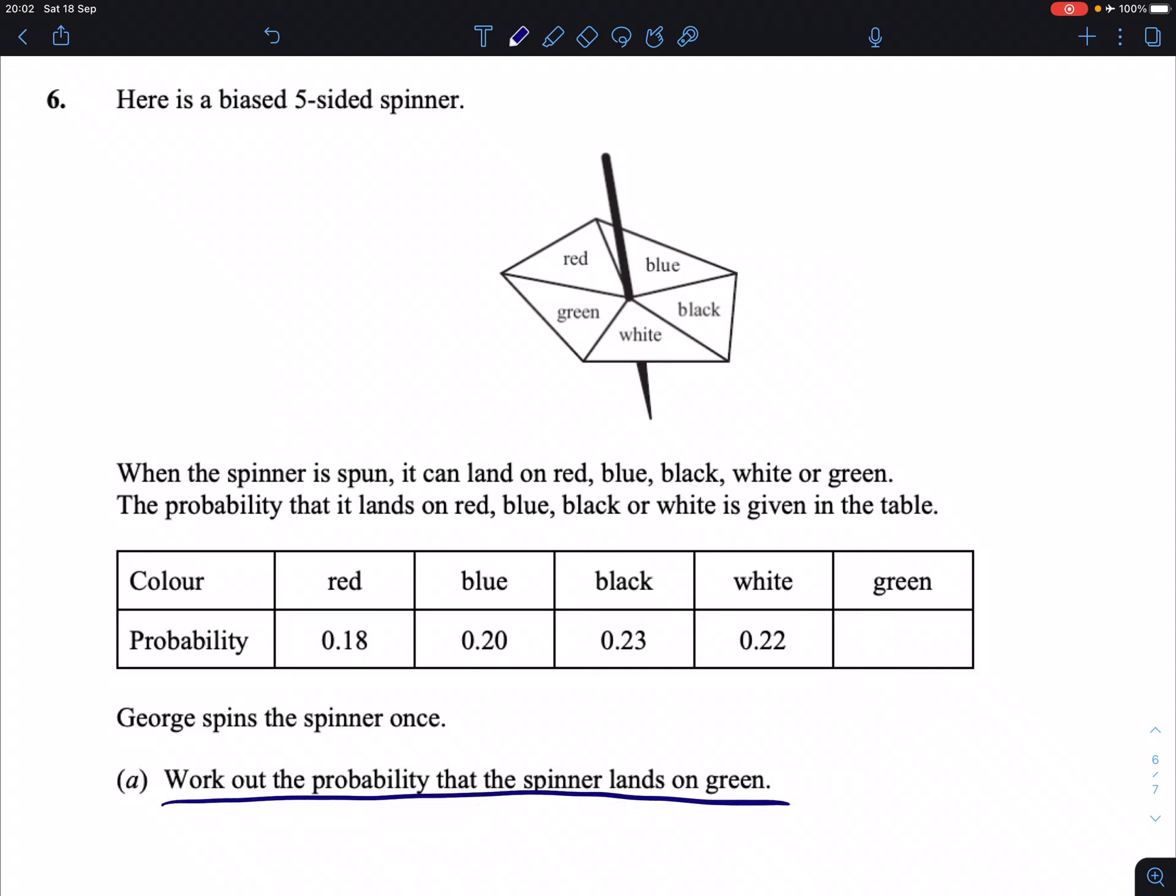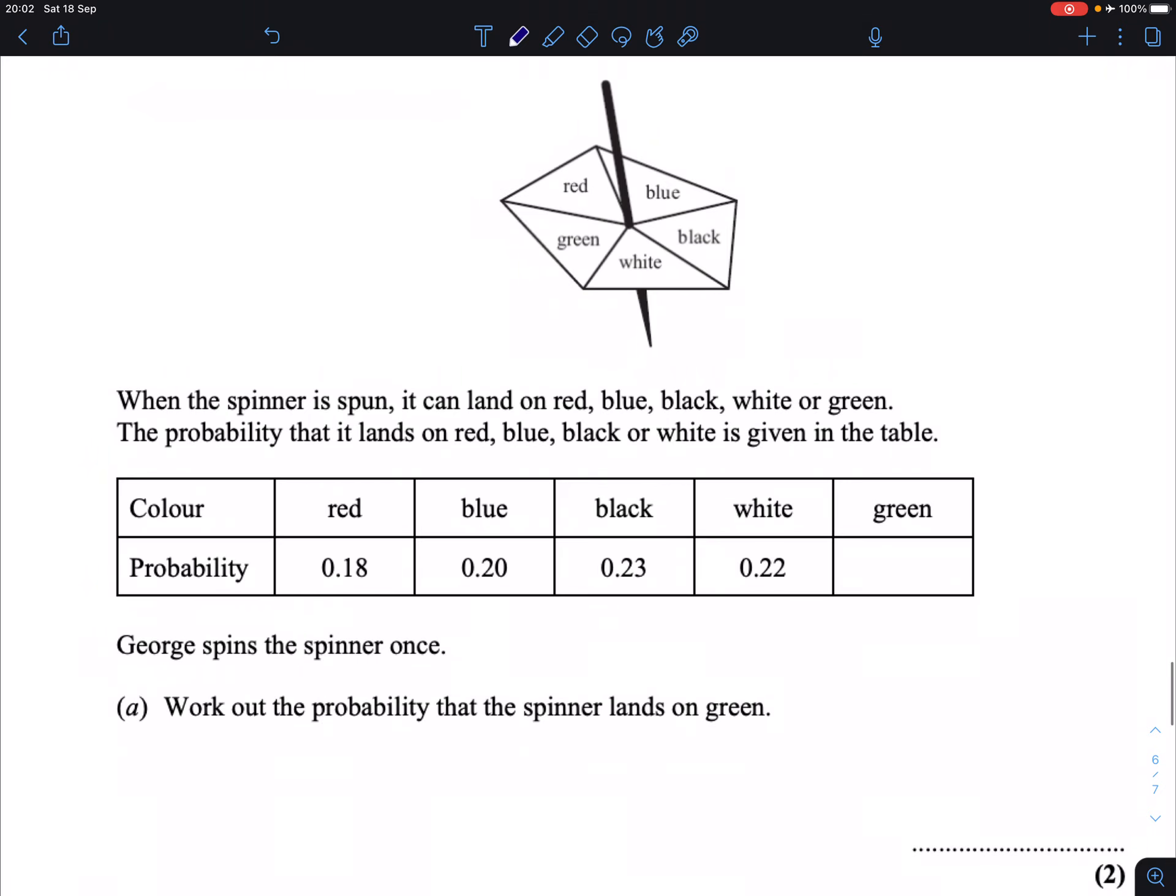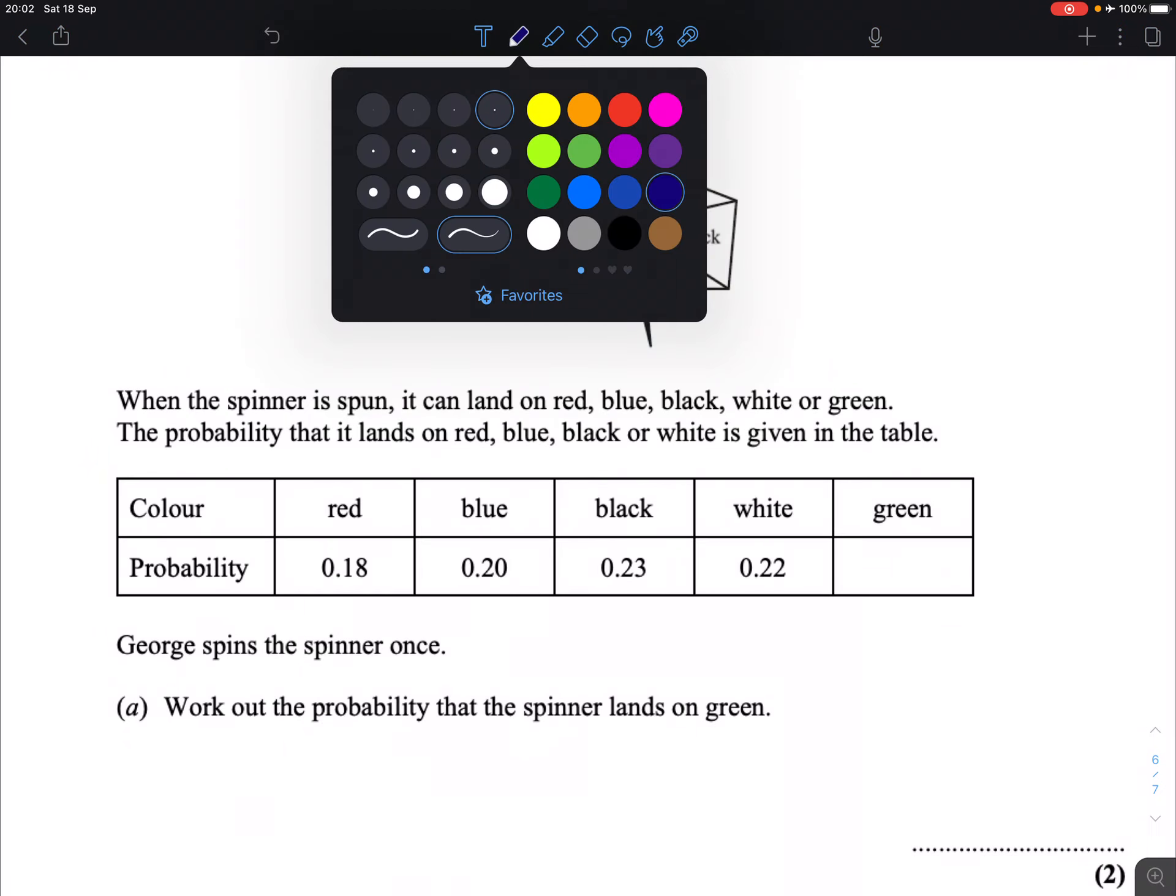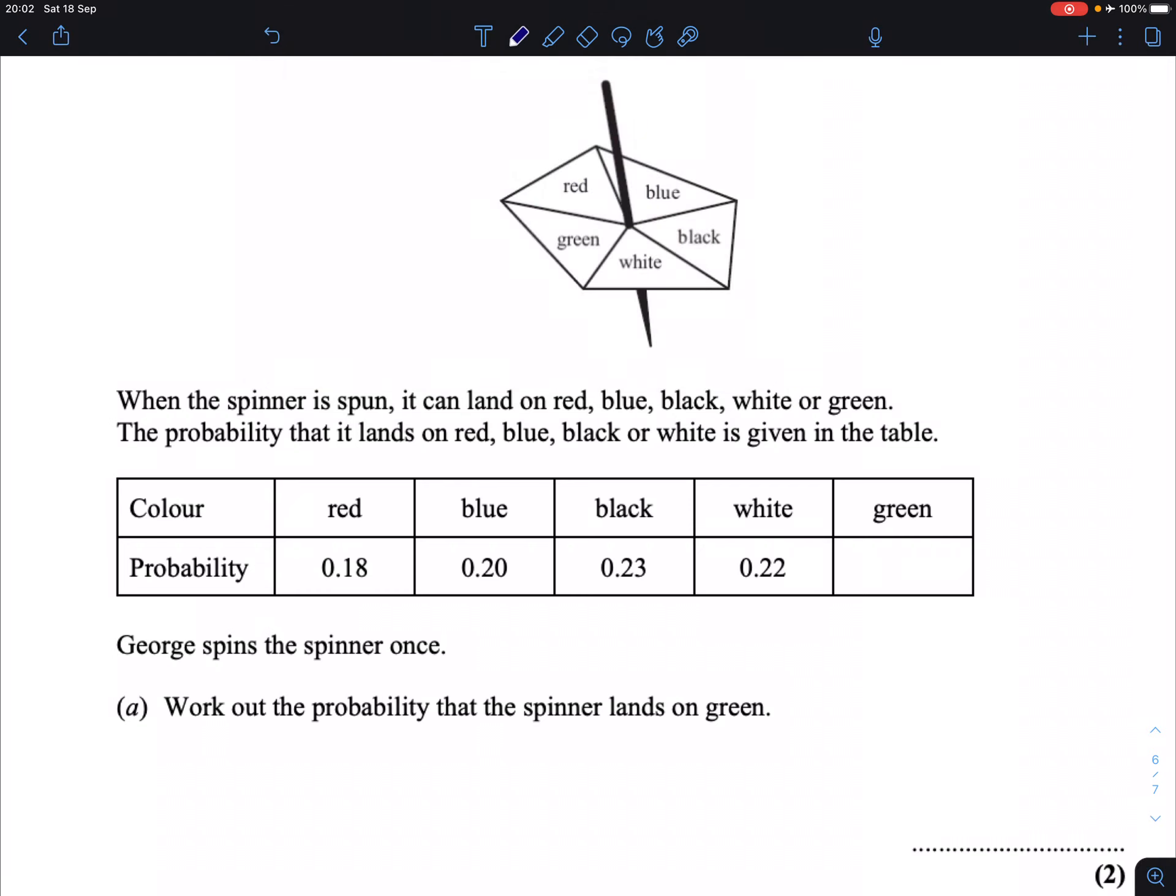Work out the probability that this spinner lands on green. Well, you have only red, blue, black, white, and green as your possibilities. There are no other possibilities that exist. Therefore, if you add together all of these probabilities, I will include this unknown as x, you should get 1.